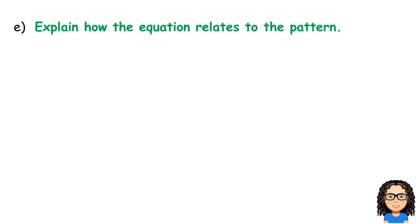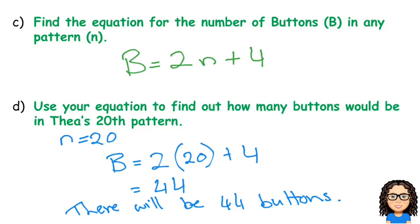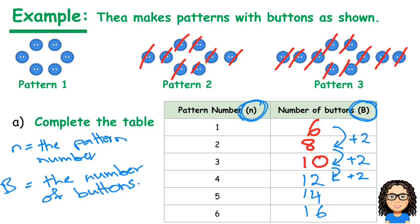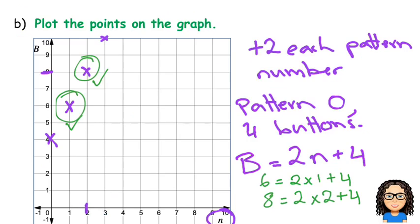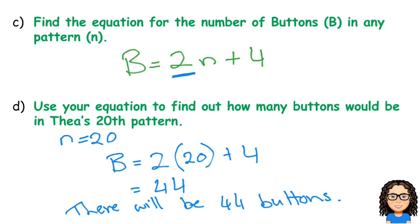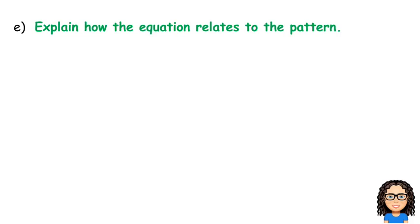Explain how the equation relates to the pattern. So, if I go back to the pattern itself. So, our very first pattern, there were how many buttons? There were 6 buttons. And going from this pattern to the next pattern, we added on 2 more buttons. Going from pattern 2 to pattern 3, we added on 2 more. So, that plus 2, if I connect that with this 2 here, that is how many more buttons you get in each pattern. And that's what I want to explain here.